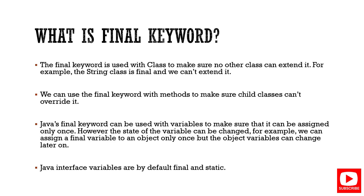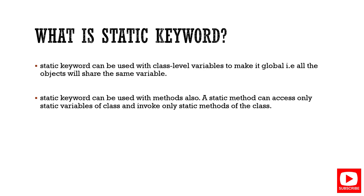Next question: what is the final keyword? The final keyword used with a class ensures no other class can extend it — for example, the String class is final. Used with a method, it ensures subclasses cannot override it. Used with a variable, it can be assigned only once. However, for objects, the object's internal state can still be changed. Java interface variables are by default final and static.